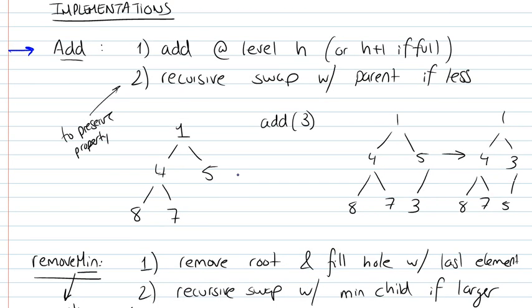And then what we're going to do, now when we've added the element, we have to position it in its right location in the tree. So we're going to recursively swap with the parent. We're going to look at that element that we've just added, and recursively swap with the parent if it happens to be less than its parent. Because remember, we're trying to preserve the property of a heap, whereby every node is smaller than its children.